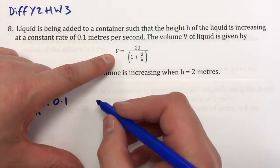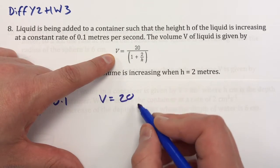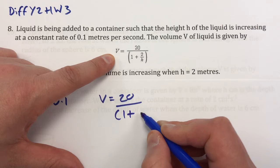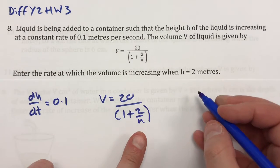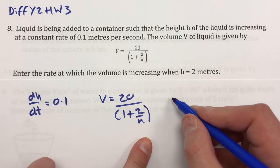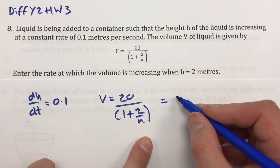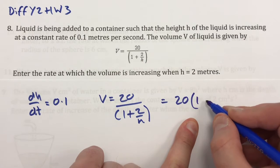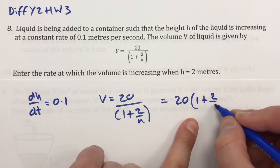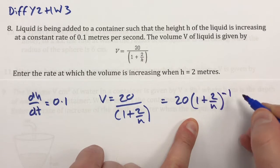The volume of the liquid is given by this expression, so V equals 20 over 1 plus 2 over h, and that's going to need to be written in a more friendly fashion as we try and differentiate it later on in the question as 20 times 1 plus 2 over h to the minus 1.